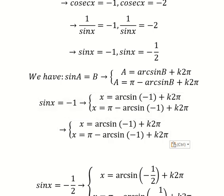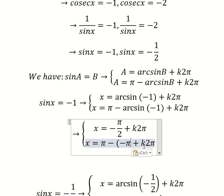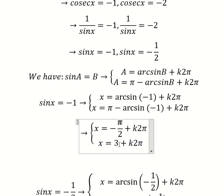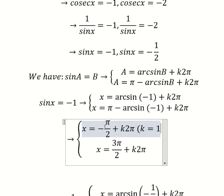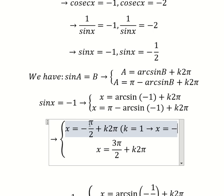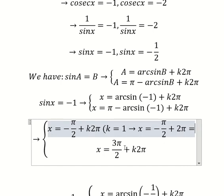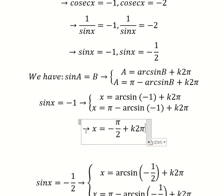This one we have negative π over two. If we simplify, negative and negative gives positive, so π plus π over two gives three π over two. But if we put k equals one in here, you get s equals negative π over two plus 2π, and you calculate and get three π over two. That means this one repeats, so we write only one solution here. This is the first one.